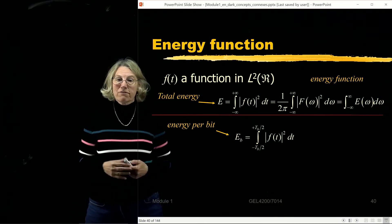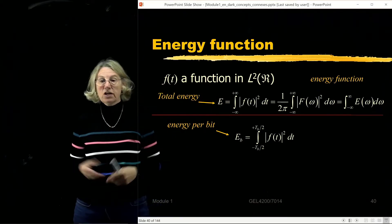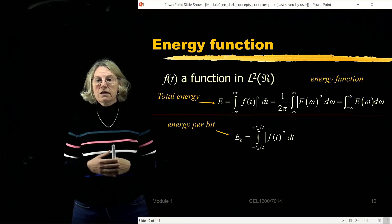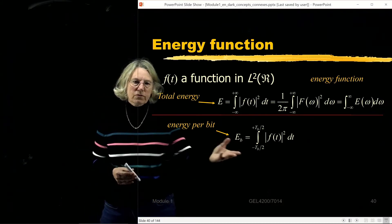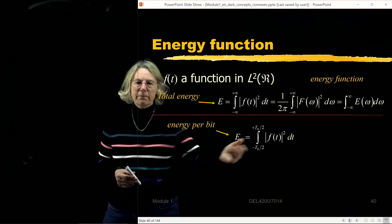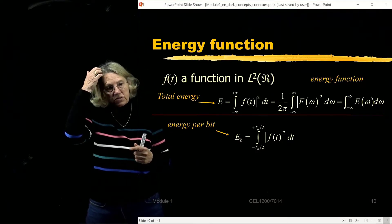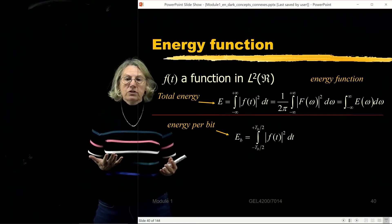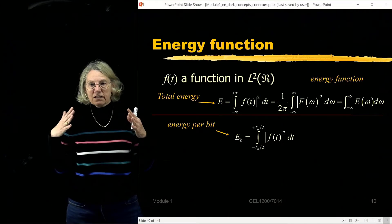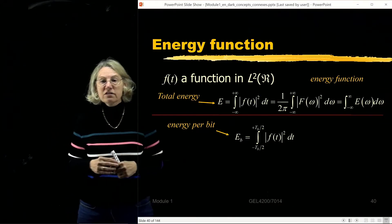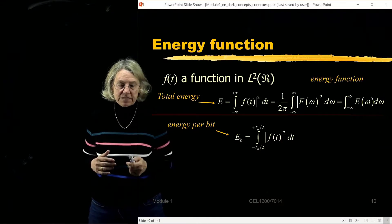Suppose that my function is not going from minus infinity to infinity — it could be a rectangle, for instance. Whatever it is, it has some finite support in the time domain. It goes from minus Tb/2 to Tb/2, where Tb is the time duration of a bit to be transmitted. The energy in a bit is just the integral of the voltage squared for the bit waveform being sent.